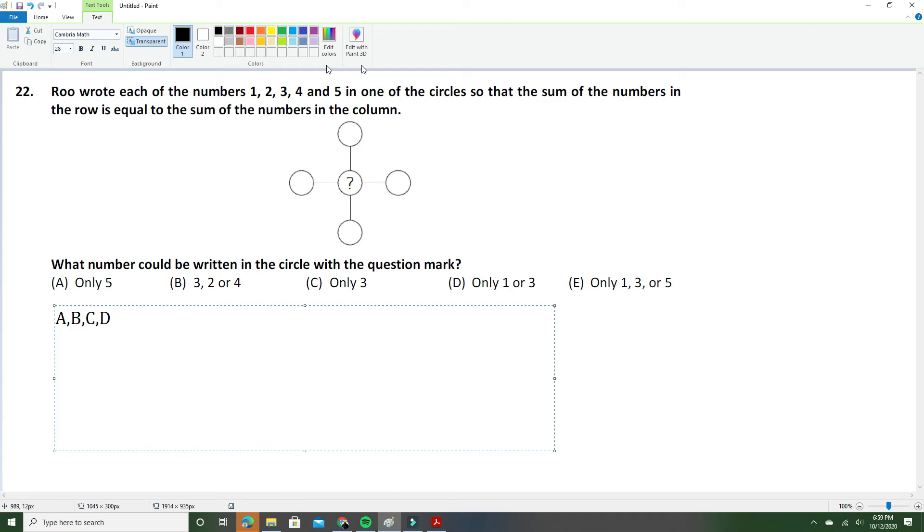Okay, so after we concluded that, since it said in the problem that the sum of the numbers in the row is equal to the sum of the numbers in the column, we can write down that A + B = C + D.